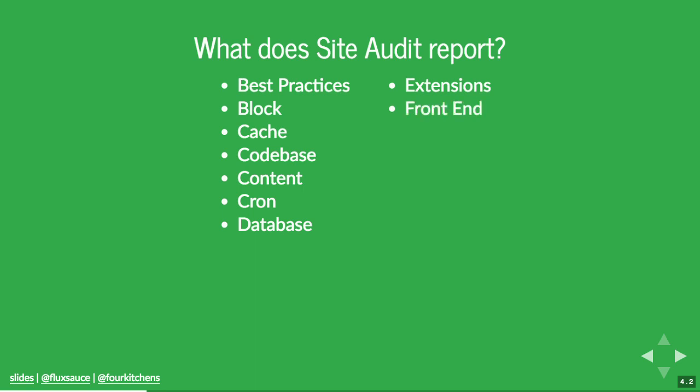For the front end, Site Audit doesn't directly look at it, but it integrates with third-party services such as webpagetest.org or Google PageSpeed Insights. If the site is accessible from those services, given an API key, it can actually run those tests and produce the results in a consistent format.